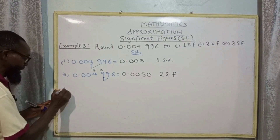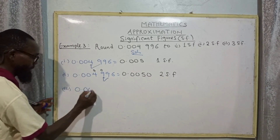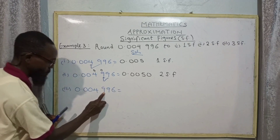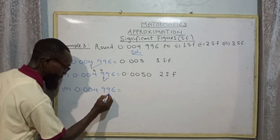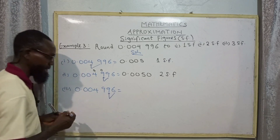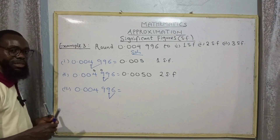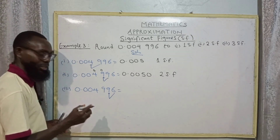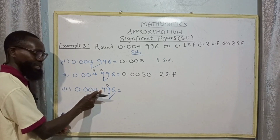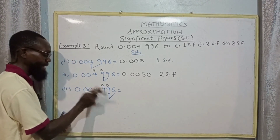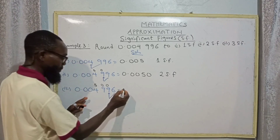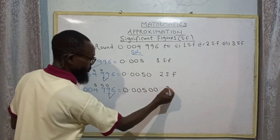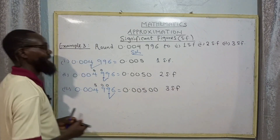For three significant figures in 0.004996: count one, two, three — the third SF is nine. Check to the right — we have six. Six rounds up to one, add one to this nine making ten — write zero, carry one. Add one to the next nine making ten — write zero, carry one. Add one to four making five. So we have 0.00500 to three significant figures.